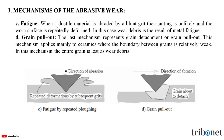The third mechanism is fatigue. When a ductile material is abraded by a blunt grit, cutting is unlikely and the worn surface is repeatedly deformed. In this case, wear debris is the result of metal fatigue. The fourth mechanism is grain pullout, which represents grain detachment. This mechanism applies mainly to ceramics where the boundary between grains is relatively weak, and the entire grain is lost as wear debris.